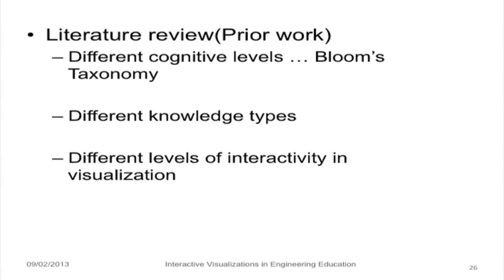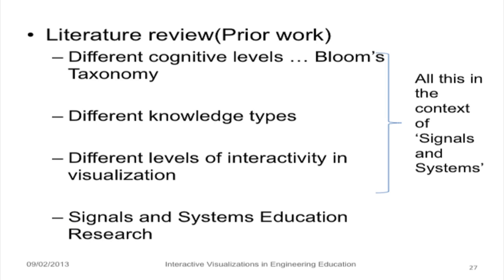How do I position my idea? The literature survey helped me understand and explore the interactive visualization research space. In order to understand the various cognitive levels, Bloom's taxonomy was referred to. There are also different types of knowledge types and different kinds of interactivity levels which have been defined in interactive visualizations. All this literature helped me position my work in the context of the research space where interactive visualizations are being explored. This work is focused on the context of signals and systems, so a review of signals and systems education research also helped me a lot.